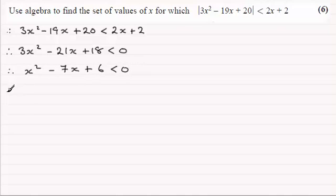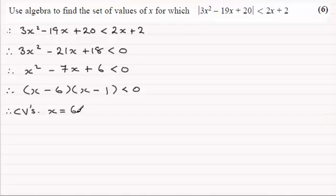And this will factorise, okay, so a couple of brackets here. Remember this is going to be less than 0, and it's going to factorise to (x - 6)(x - 1). So from here we should be able to get our critical values. I'll just write CVs for short. Values of x which would make this equal to 0, which would be x = 6 and x = 1.